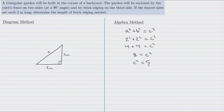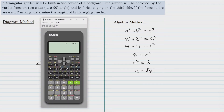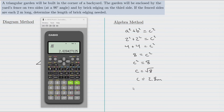Some number multiplied by itself should equal 8. To find that number we use the inverse operation of squaring, which is square rooting, so C equals the square root of 8. That's an exact answer. For an approximate value we use a calculator: the square root of 8 is about 2.8. So C equals approximately 2.8 meters. Therefore, the length of the brick edging needed is 2.8 meters.